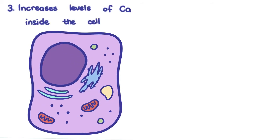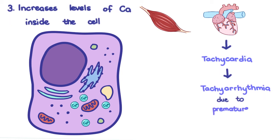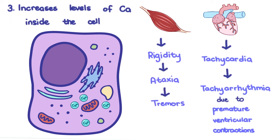Methyl xanthines also increase levels of calcium inside the cell, letting more come in and inhibiting its sequestration into the sarcoplasmic reticulum. This is significant in skeletal and cardiac muscle cells, as this increases their strength and contractility. This contributes to the tachycardia, which may develop into a tachyarrhythmia due to premature ventricular contractions. The skeletal muscles may become rigid and the patient ataxic. Tremors could develop, which, together with the CNS stimulation, may progress to seizures.